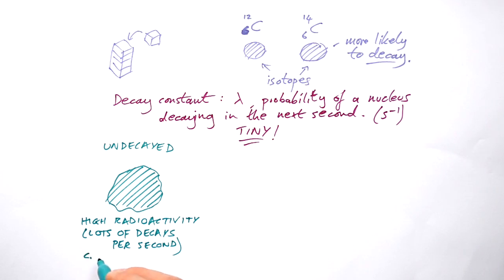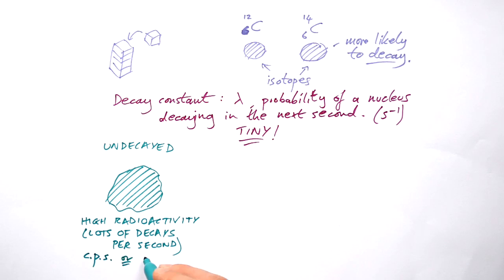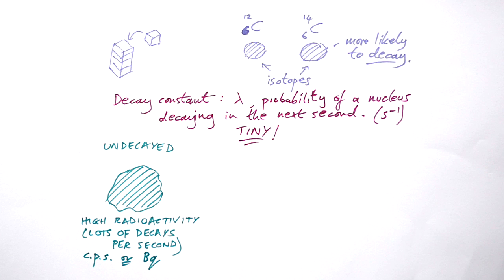By the way, we can measure this in counts per second — in other words, how many decays are happening per second. And that also has the name Becquerel. So Becquerel is just the number of decays per second.